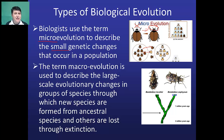Typically microevolution is something that can occur over a few generations, which means it's something we can actually observe within our lifetimes. Macroevolution, on the other hand, describes the large-scale evolutionary changes that take place over time, in which new species are formed from ancestral ones, and others are lost as a result of extinction. Typically, especially with organisms that reproduce at slower rates, we're not going to be able to see macroevolution within our own lifetimes.